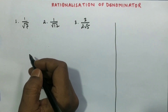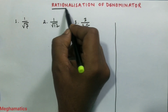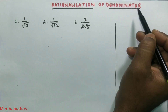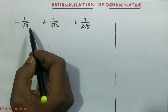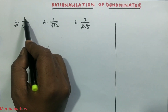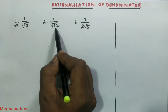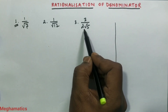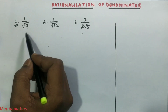Hello everyone. Today in this video we will learn how to rationalize the denominator of a fraction. We have three fractions: number 1 is 1 by root over 7, number 2 is 1 by root over 2, and number 3 is 3 by 2 root over 5.